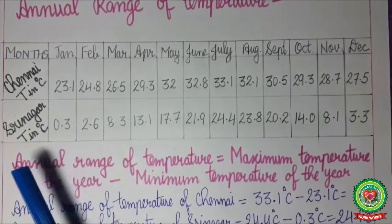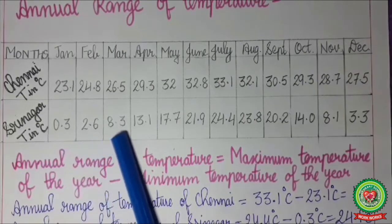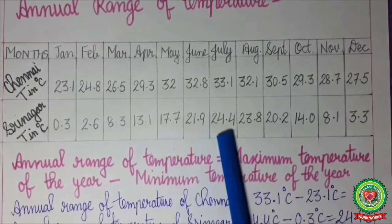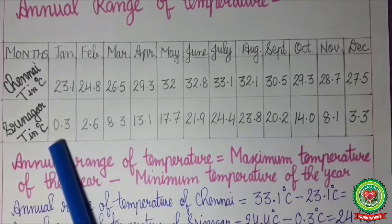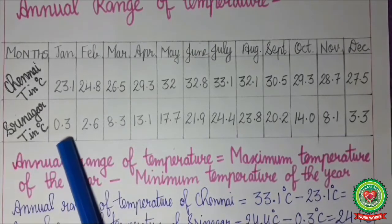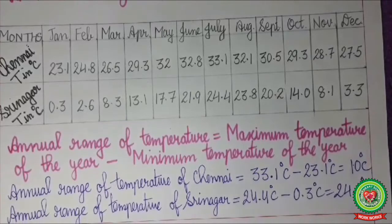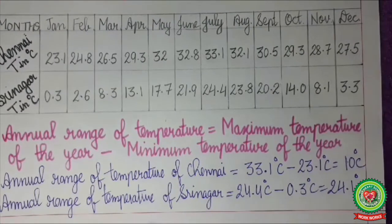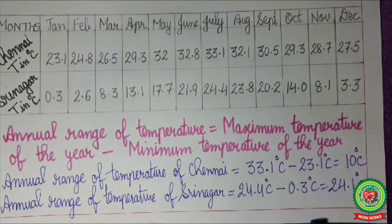In the same way, for the second city Srinagar: the maximum temperature is in July at 24.4 degrees Celsius, and the minimum temperature is 0.3 degrees Celsius in January. So the annual range of temperature for Srinagar will be 24.4 degrees Celsius minus 0.3 degrees Celsius, that is 24.1 degrees Celsius.